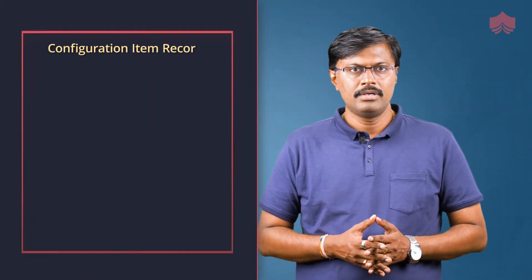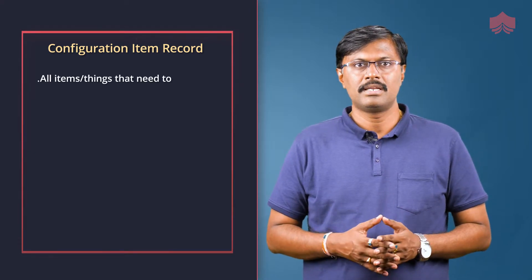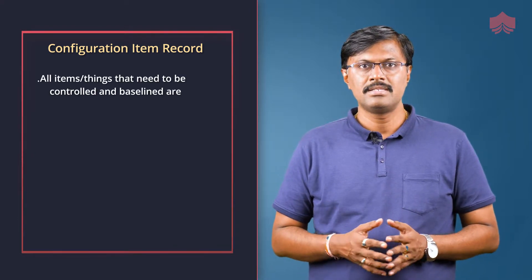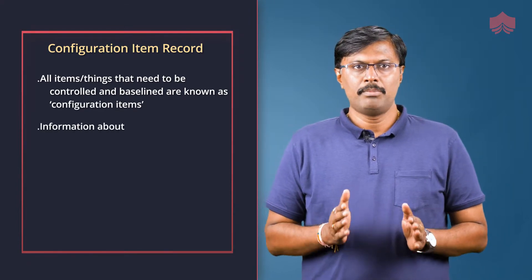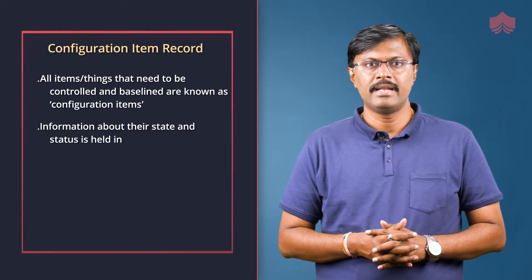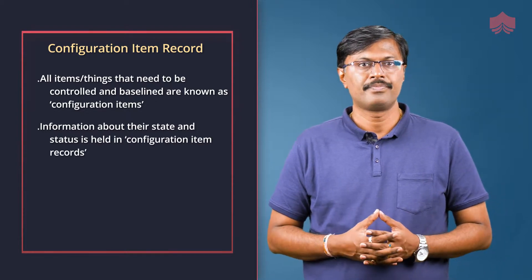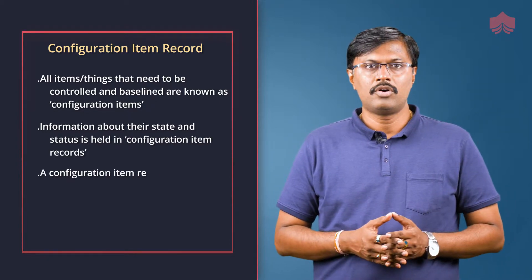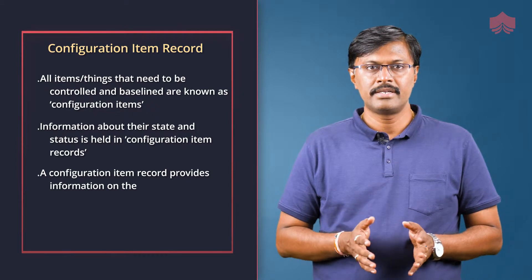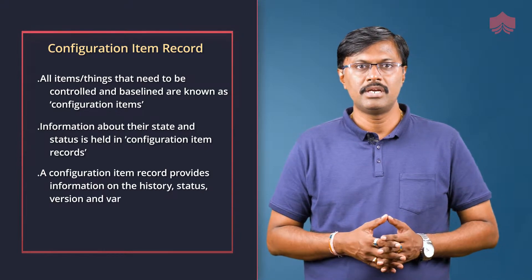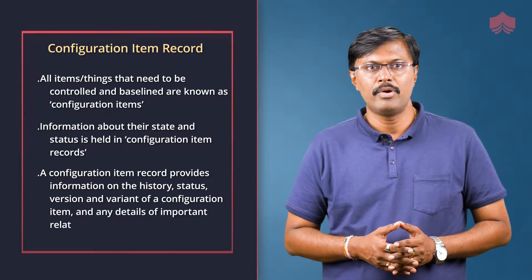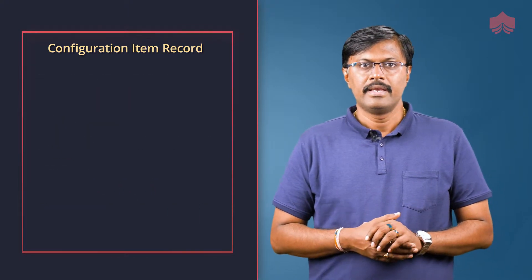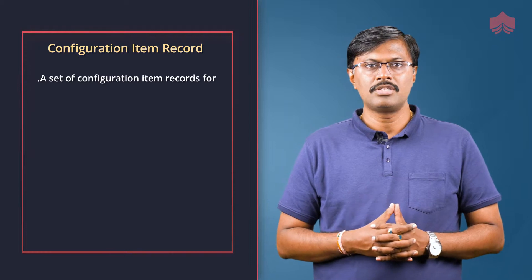Configuration item record captures all items — things that need to be controlled and baselined — and are known as configuration items. Information about their state and status is held in configuration item records. A configuration item record provides information on the history, status, version and variant of a configuration item, and any details of important relationships between them. A set of configuration item records for a project is referred to as a configuration library.